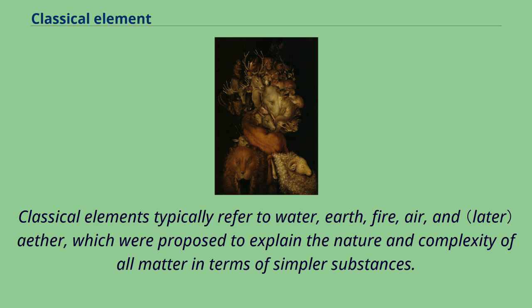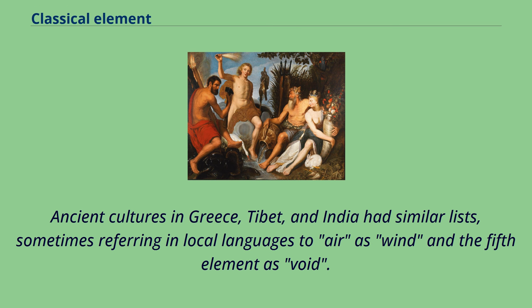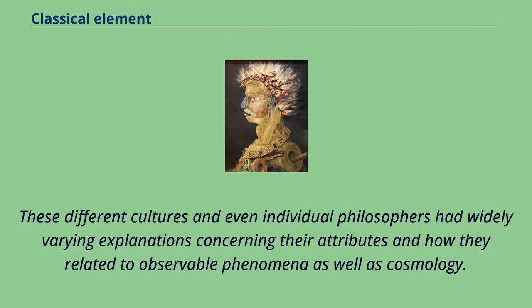Classical elements typically refer to water, earth, fire, air, and ether, which were proposed to explain the nature and complexity of all matter in terms of simpler substances. Ancient cultures in Greece, Tibet, and India had similar lists, sometimes referring in local languages to air as wind and the fifth element as void.